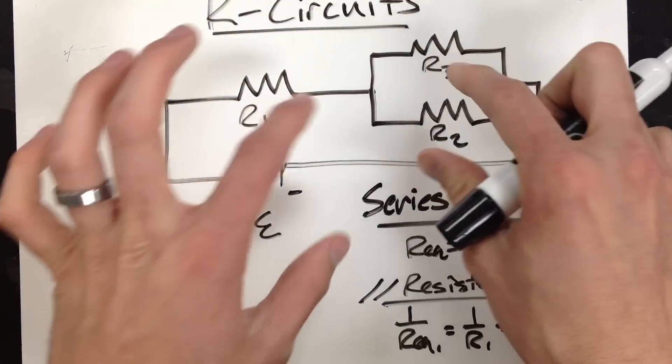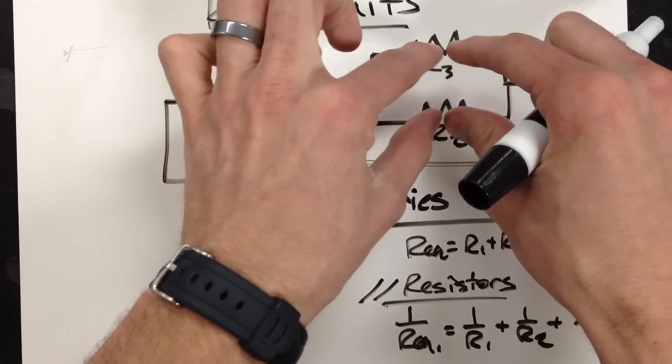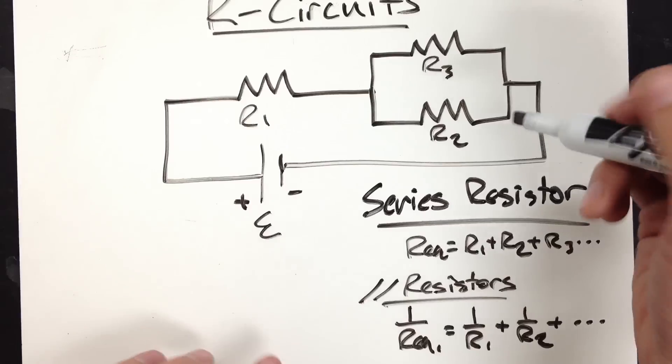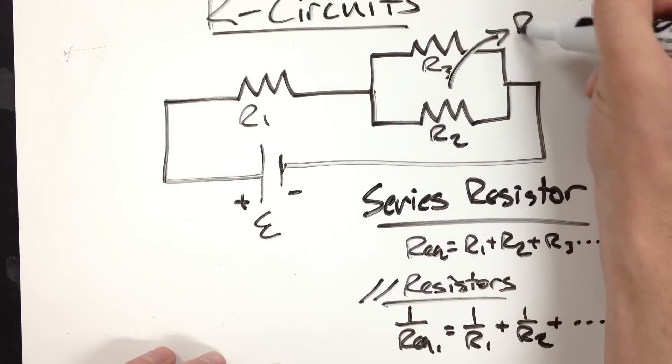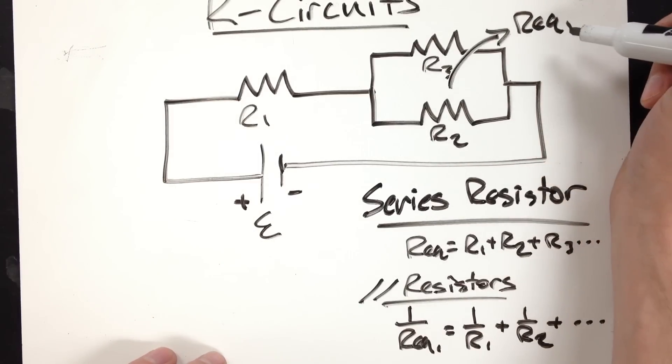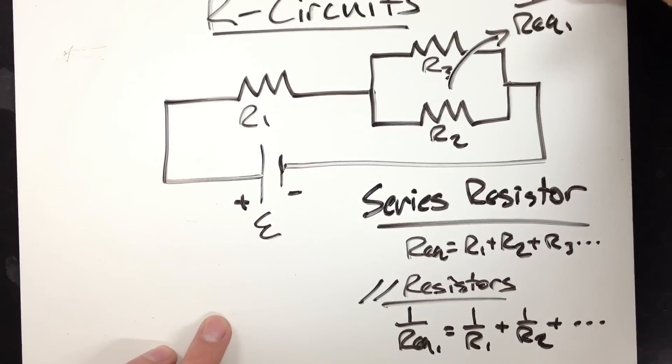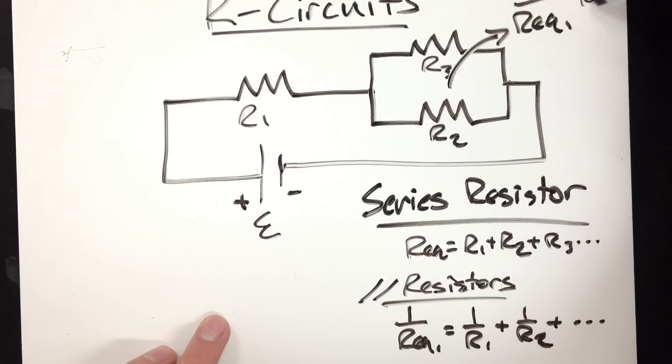So what you'd want to do here is you'd want to start inside your parallel set and then work your way out. So get an equivalent resistance here, call it REQ1. And that is going to be a reciprocal sum: 1 over R2 plus 1 over R3.